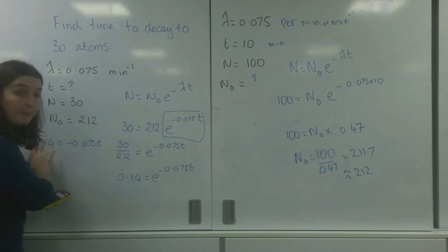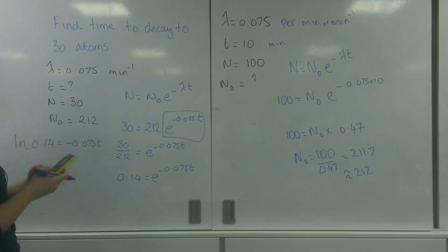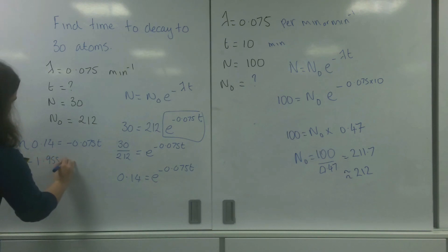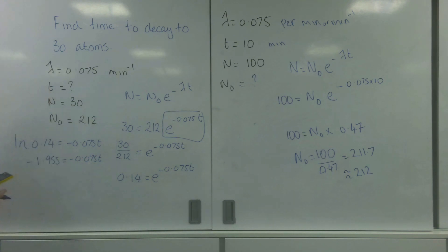This ln here will be a number. So I can put that into my calculator and I get minus 1.955.